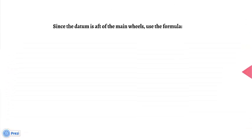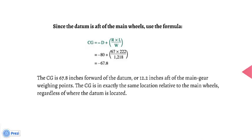Since the datum is aft of the main wheels, use the formula: CG equals negative D plus open parenthesis R times L, all over W, close parenthesis. Substituting values: negative 80 plus open parenthesis 67 times 222, all over 1,218, close parenthesis. The answer is negative 67.8. The CG is 67.8 inches forward of the datum, or 12.2 inches aft of the main gear weighing points — exactly the same location relative to the main wheels regardless of where the datum is located.